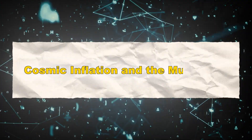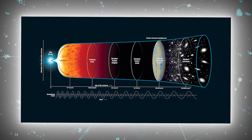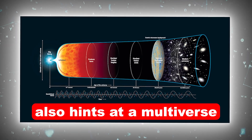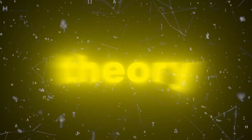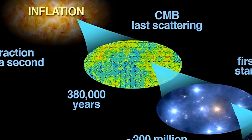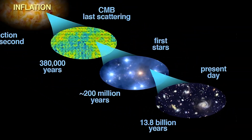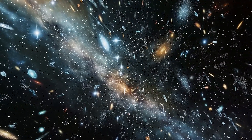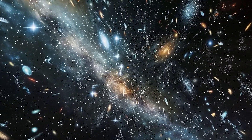Cosmic inflation and the multiverse: cosmic inflation theory, which describes the rapid expansion of the universe just after the Big Bang, also hints at a multiverse. According to this theory, different regions of space could have undergone inflation at different rates, creating pocket universes with varying physical laws. This process, known as eternal inflation, suggests that our observable universe is just a tiny part of a much larger and diverse multiverse.